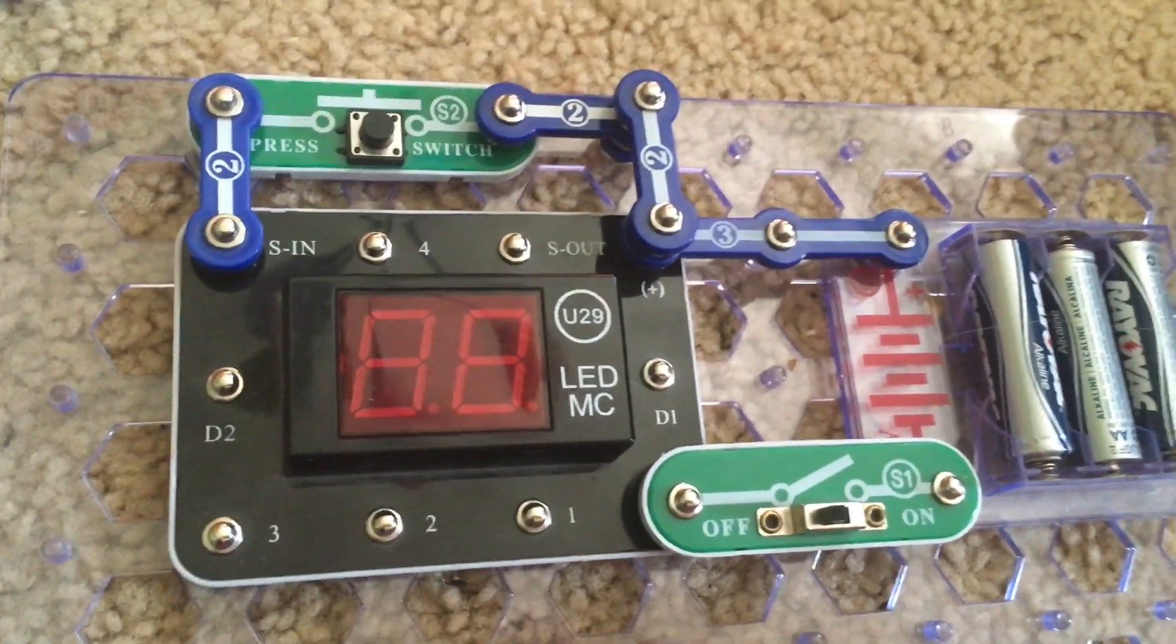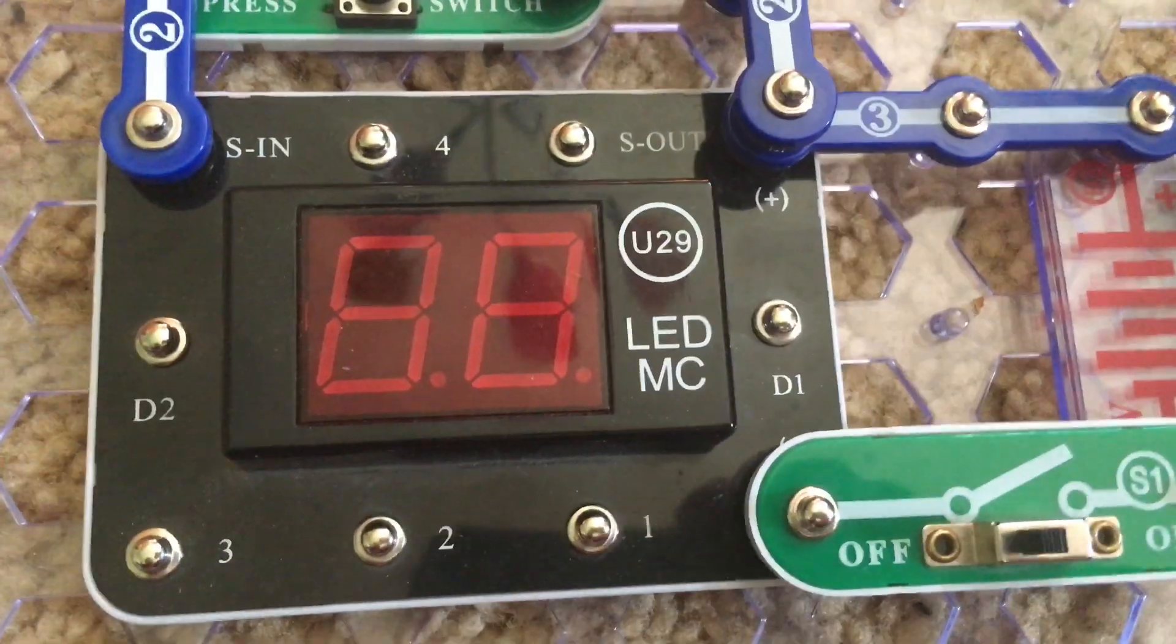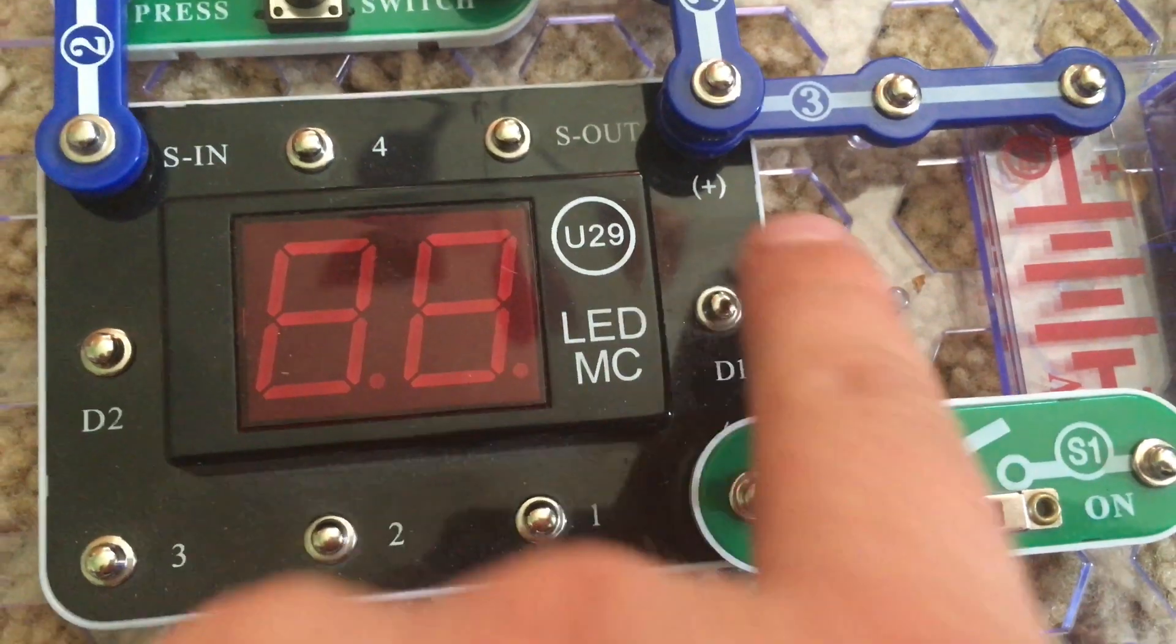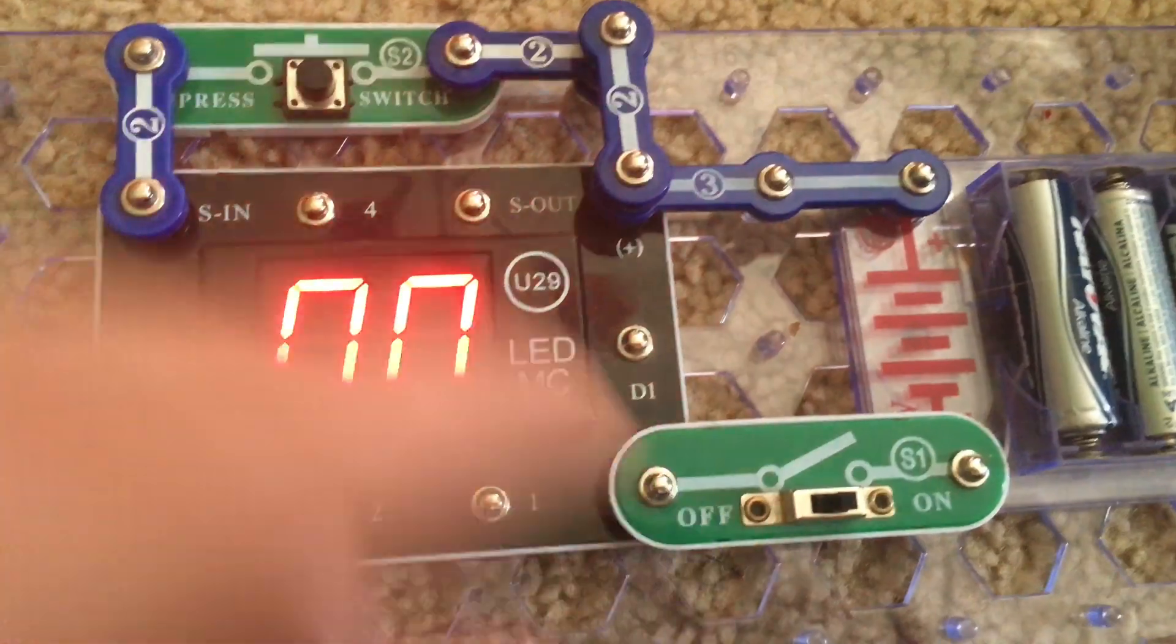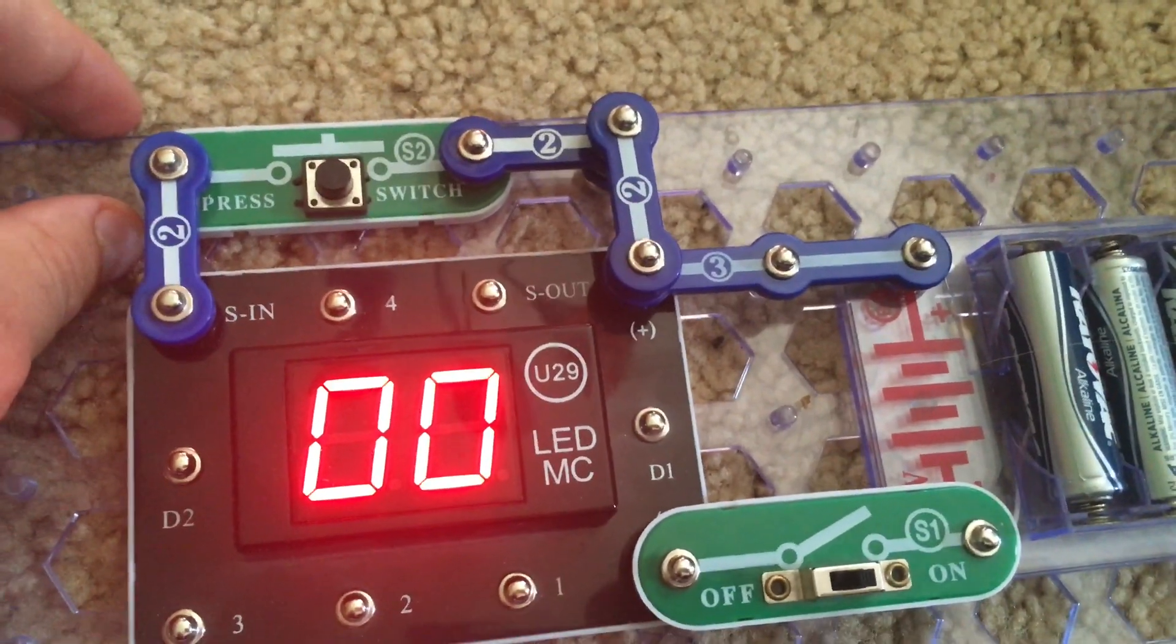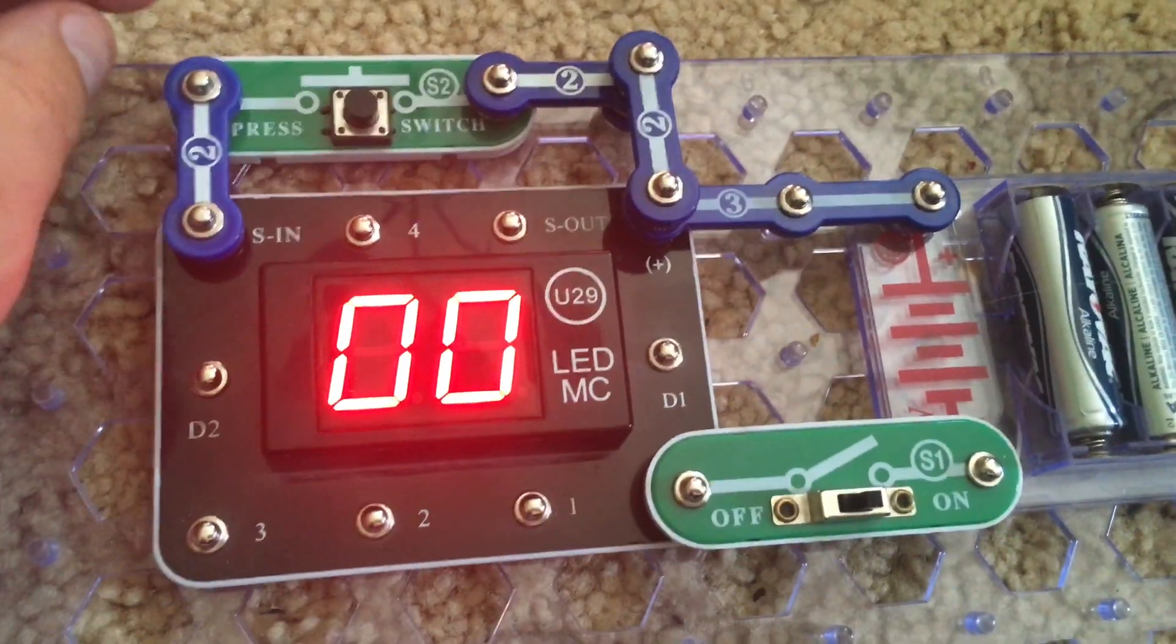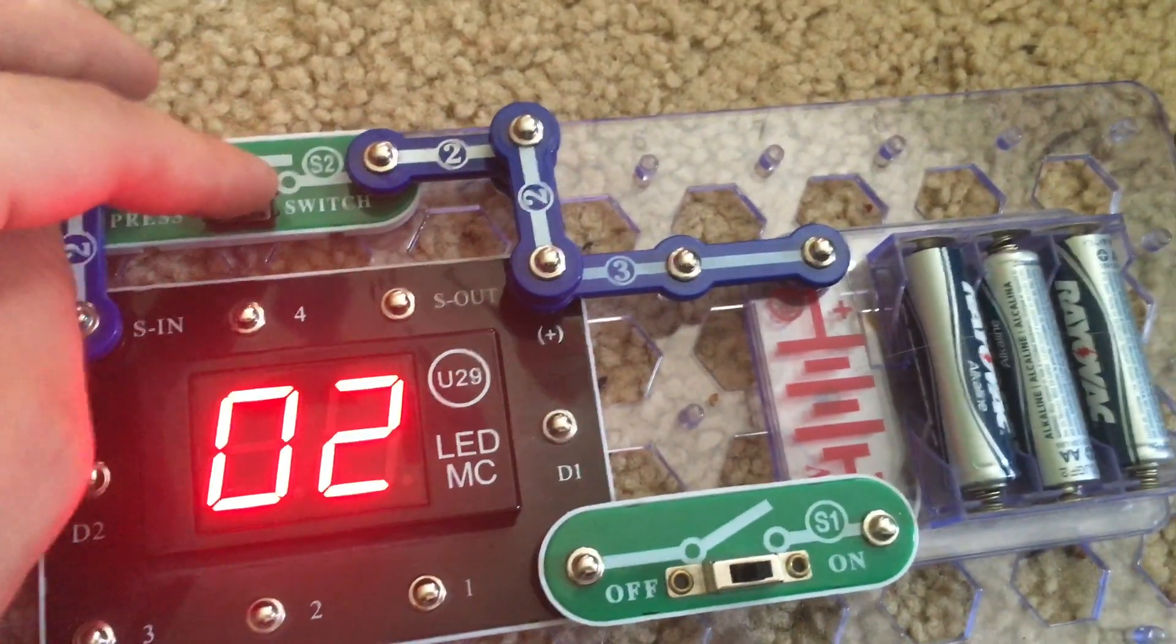Project 196 is add one at a time. I removed the two snap wire between points A and B which are here and we will turn on the slide switch. Now both digits of the U29 display show zeros. And we are going to hit the press switch and the ones display changes first.